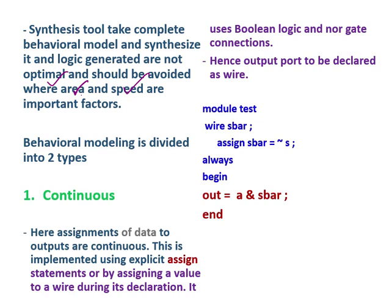Behavioral modeling is normally used during verification, or when writing testbenches. It is very helpful during testbench writing or RTL verification. Behavioral modeling is divided into two types: continuous and procedural. In continuous assignment, data assignments to outputs are continuous, implemented using explicit 'assign' statements or by assigning a value to a wire during its declaration — it uses boolean logic and gate connections.